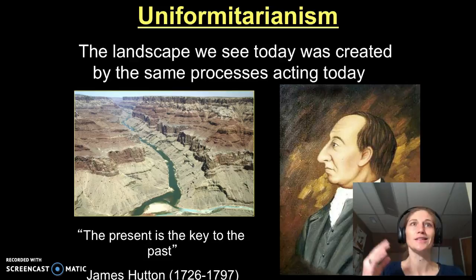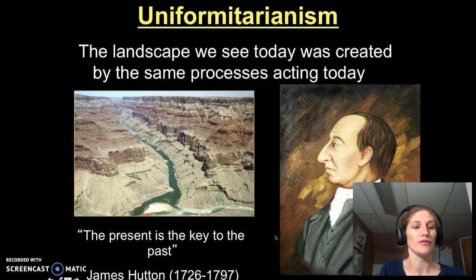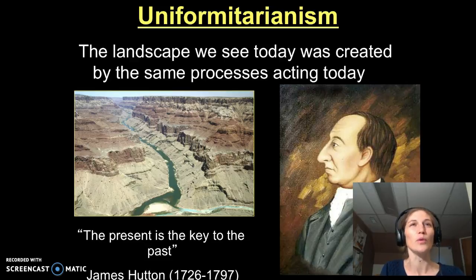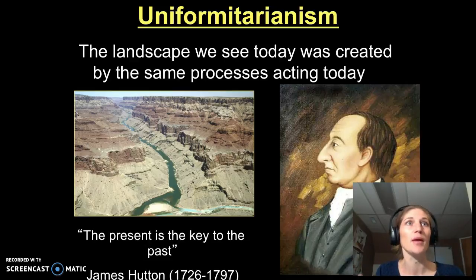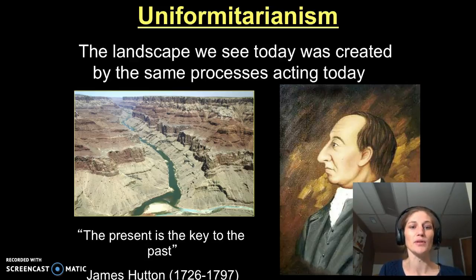Later, as naturalists and geologists began to explore the landscape and make observations — seeing fossils high up on top of mountains — they started to realize that wasn't well explained by a biblical flood. The person shown here is James Hutton, considered the father of modern geology, who lived from 1726 to 1797. His idea was that when we look at the landscape, there are processes happening today that seem very small, but over long periods of geologic time they can make a larger impact and shape the earth. This is the idea of uniformitarianism.